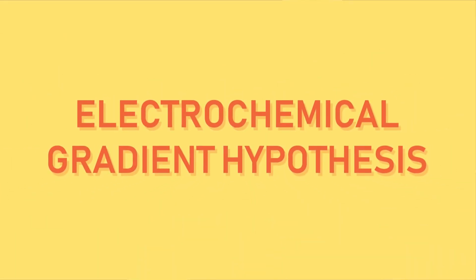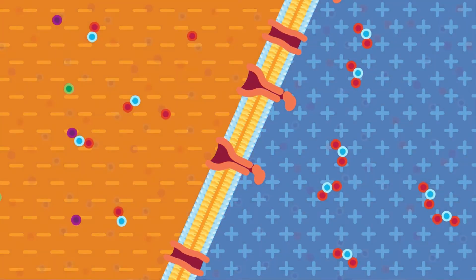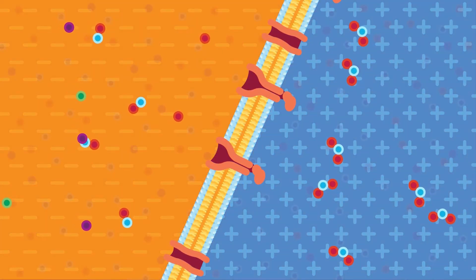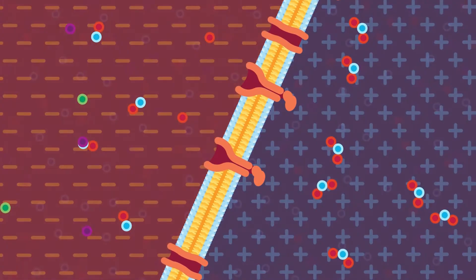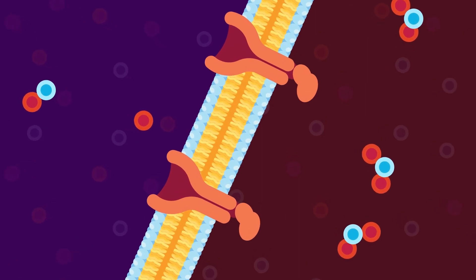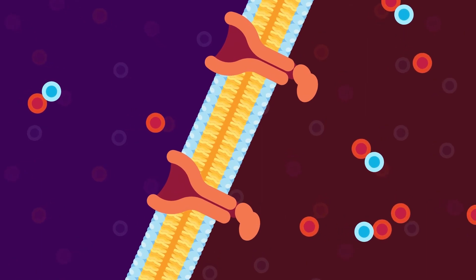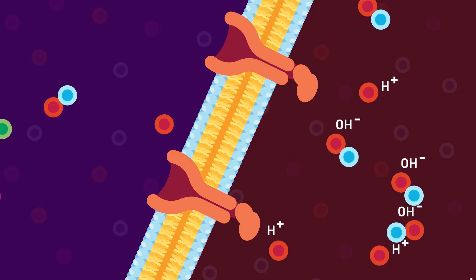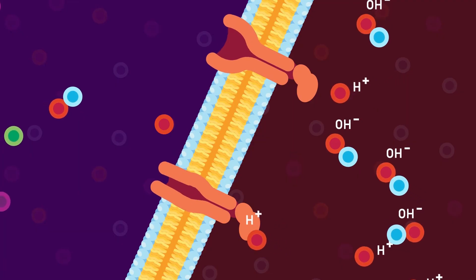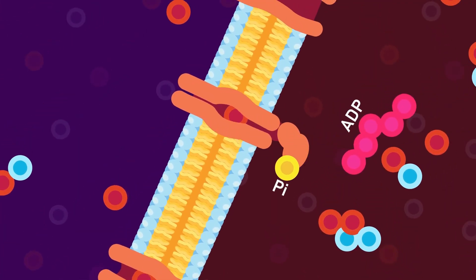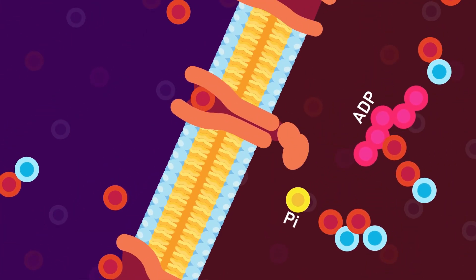An electrochemical gradient exists across the plasma membrane of the cells. This is due to two things: one, the splitting of water molecules into hydrogen and hydroxyl ions; and two, the conversion of ATP into ADP and inorganic phosphate.